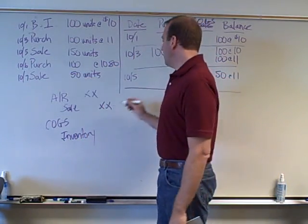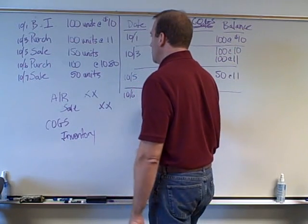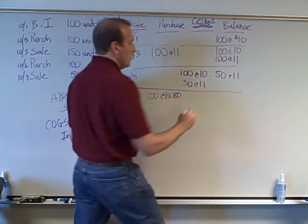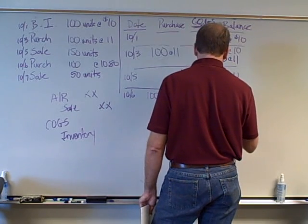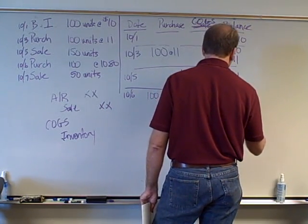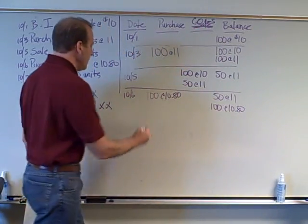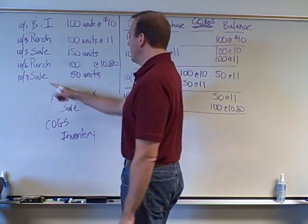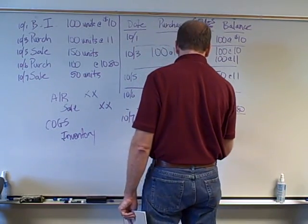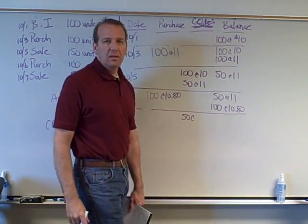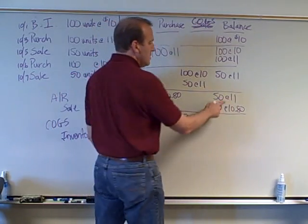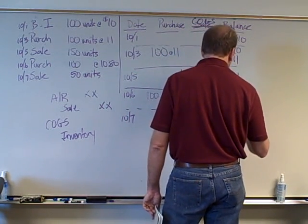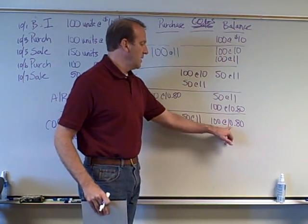Let's move to the next transaction. We now purchase some more. On the 6th, we have a purchase of 100 at $10.80. So now we've got our 50 at $11 and 100 at $10.80. Then on the 7th, we have one more transaction — another sale. We sold 50 units. Which 50 did we sell? Well, this is first in, first out, so we sold the $11 ones. What do we have left in inventory? We have 100 at $10.80.